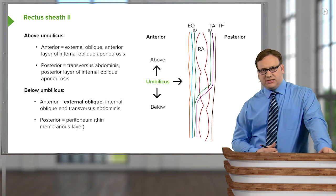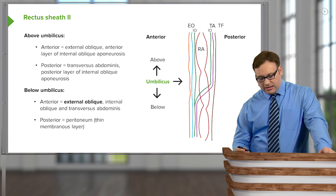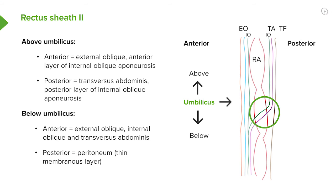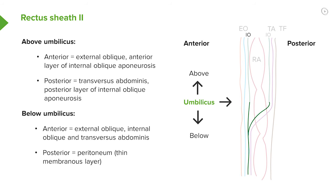Just below the umbilicus, rectus abdominis muscle penetrates these layers — it actually pierces them and lies posterior to them. So now below the umbilicus we have external oblique, internal oblique whose anterior and posterior laminae have merged, and then transversalis fascia.